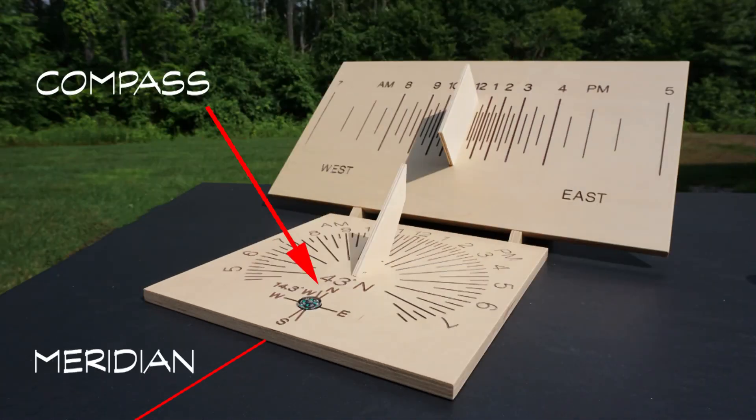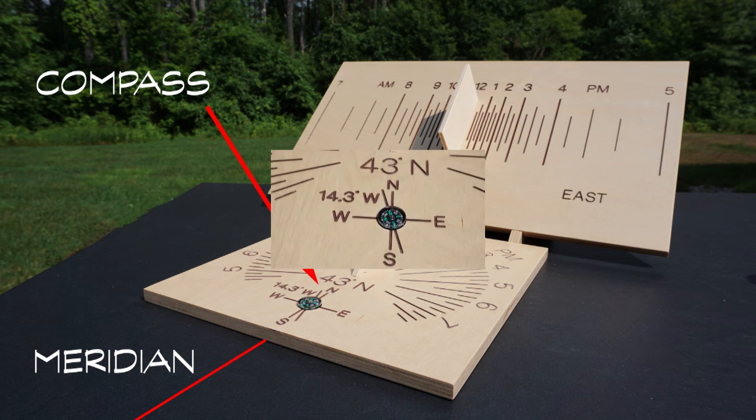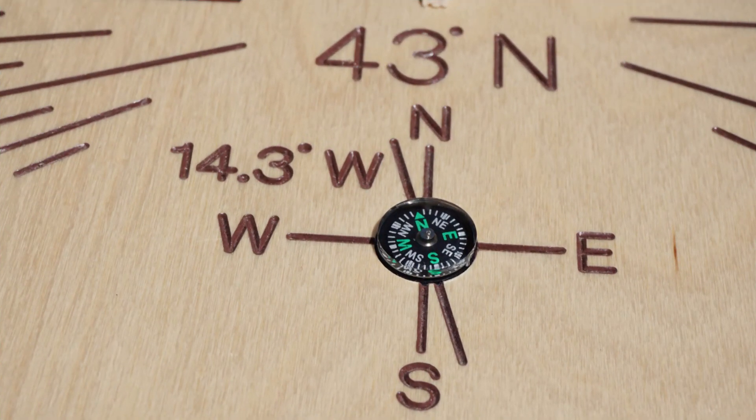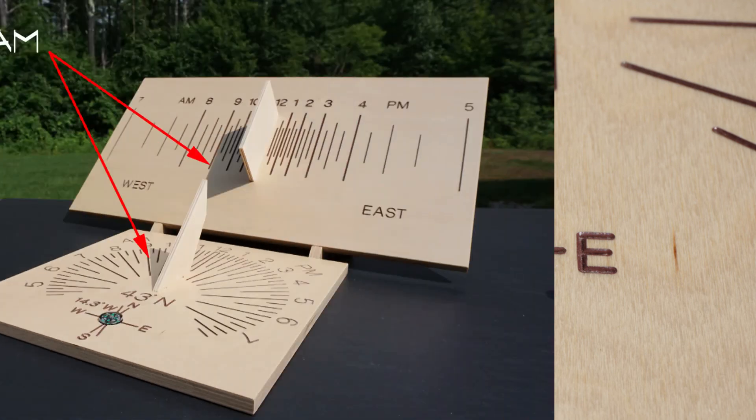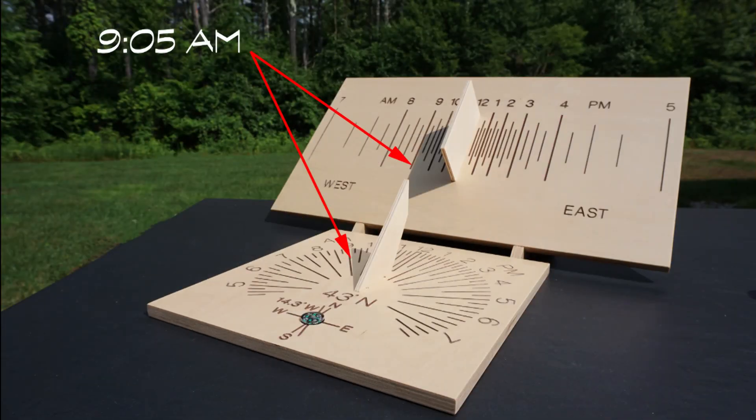This can be done with a compass taking the local magnetic correction into account. Here I'm using a horizontal dial with a built-in compass to rotate and align the dials with geographic north. To simplify the alignment, the compass has the magnetic correction for this location, 14.3 degrees west, built into it. We can now see that both dials are aligned and reflect the same time.